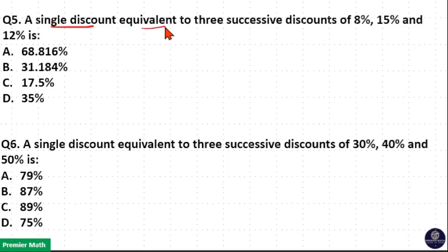A single discount equivalent to three successive discounts of 8%, 15%, and 12% is here. Use the successive discount formula, that is A plus B minus AB by 100.